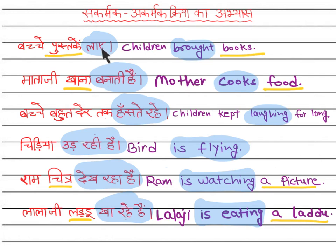So, 'lae' is a Sakarmakriya. 'Banaati hai' is a Sakarmakriya. 'Haste rahe' — Akarmakriya. 'Ud rahi hai' — Akarmakriya. 'Dekh raha hai' is a Sakarmakriya. 'Kha rahe hai' is a Sakarmakriya. We will practice Sakarmak and Akarmakriya with more examples in the next video.